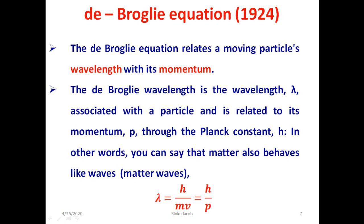In 1924, de Broglie formulated the de Broglie hypothesis, which claimed that all matter has a wave-like nature. He related the particle nature, which is the momentum of the particle, with the wave nature of the particle — that is, the wavelength associated with the particle when it behaves as a wave — by the formula lambda equal to h by p, where h is Planck's constant and p is the momentum of the particle. The de Broglie formula was confirmed three years later for electrons with the observation of electron diffraction in two independent experiments.